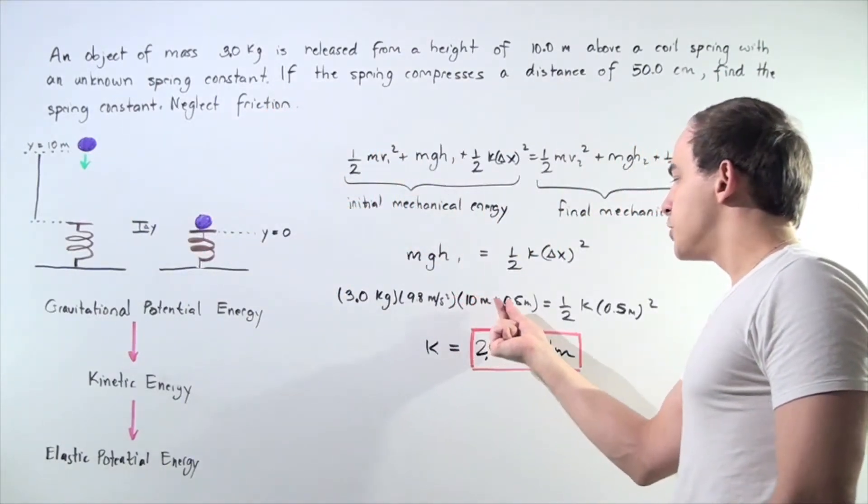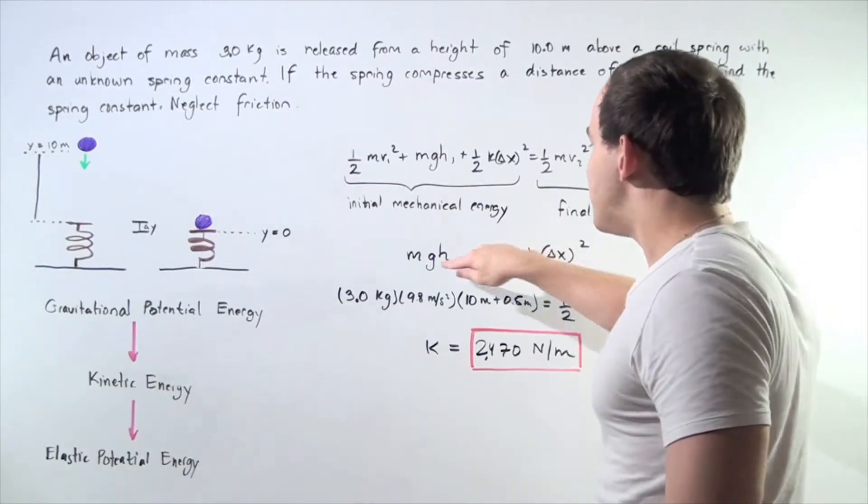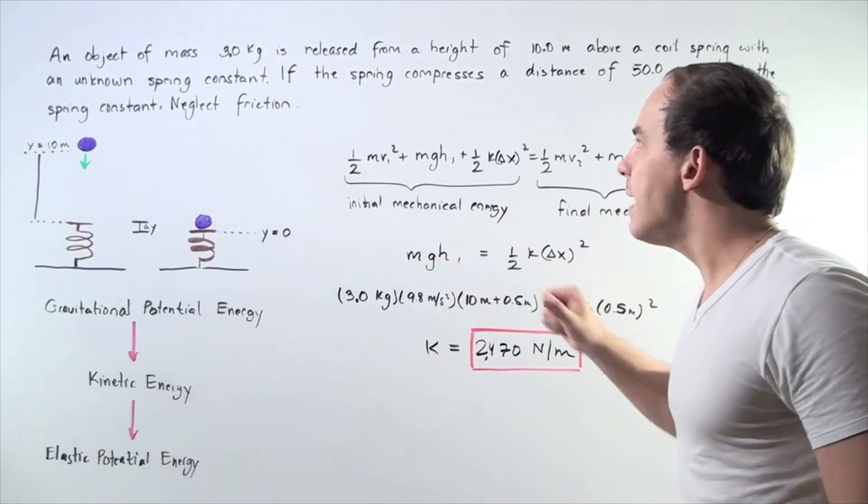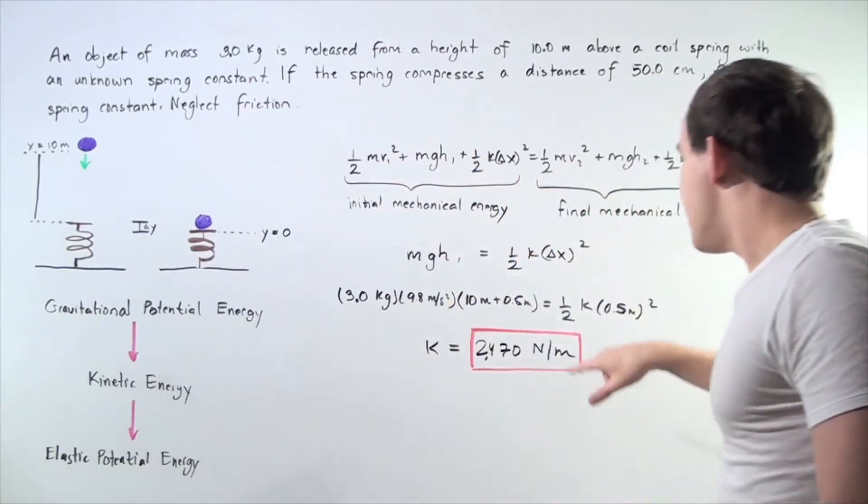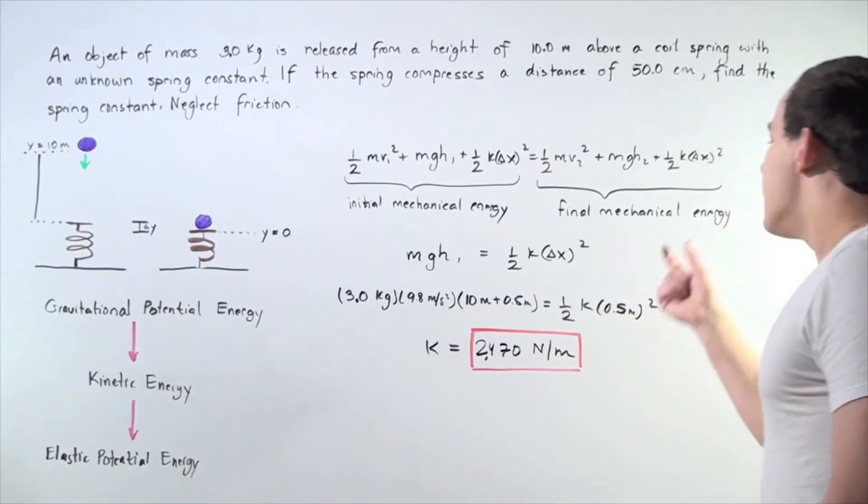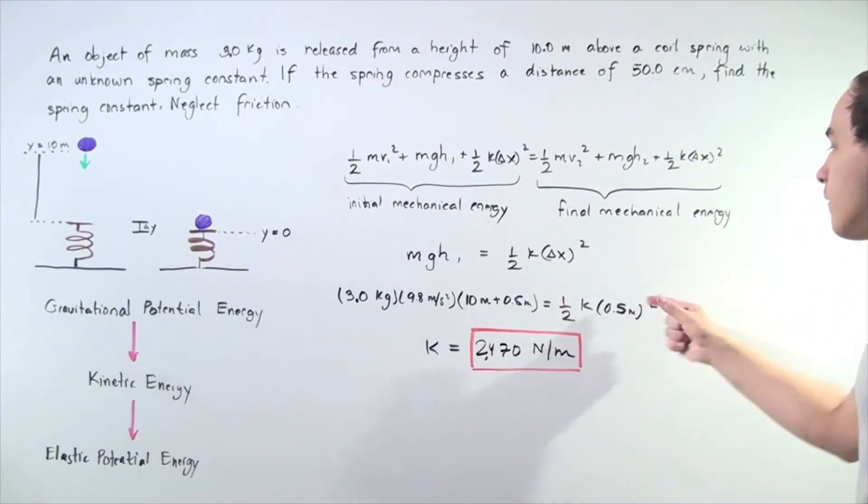so 10 meters plus 0.5 meters. We know what g is, 9.8 meters per second squared. We know what m is, three kilograms. That equals one-half of the thing we're looking for, the spring constant, multiplied by the square of displacement, 0.5 meters.